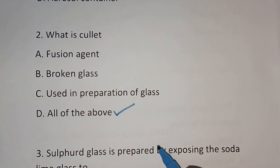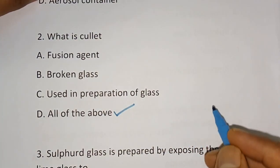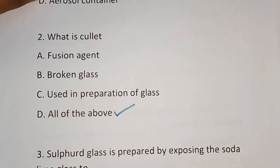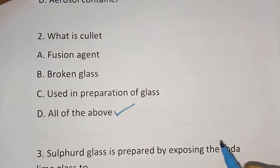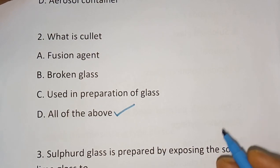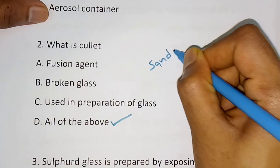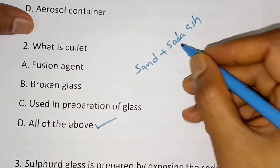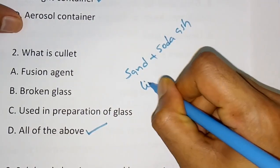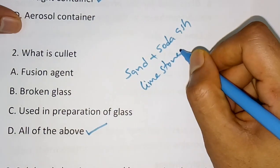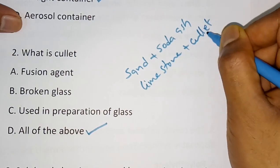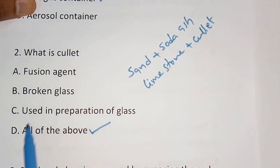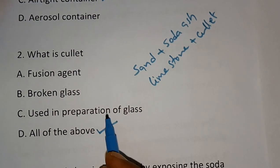Cullet is actually broken glass that is mixed with the batch to prepare glass. It acts as a fusion agent for the total mixture. The ingredients needed are sand, soda ash, and limestone, and cullet is also added. So cullet — broken glass — acts as a fusion agent and is used in the preparation of glass. The correct answer is all of the above.